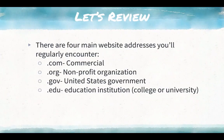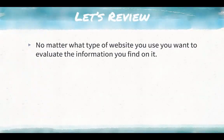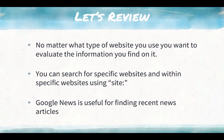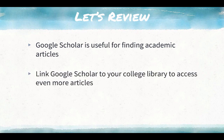Let's review. There are four main website types you regularly encounter: .com for commercial, .org for nonprofit organizations, .gov for United States government websites, and .edu for educational institutions, mostly colleges or universities. No matter what type of website you use, evaluate the information you find on it. You can search for specific websites and within specific websites using site colon. Google News is useful for finding recent news articles. Google Scholar is useful for finding academic articles. Link Google Scholar to your college library to access even more articles.